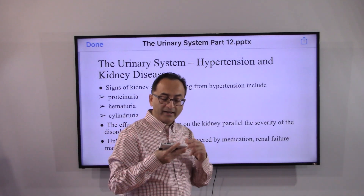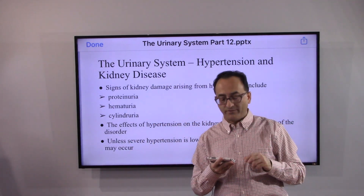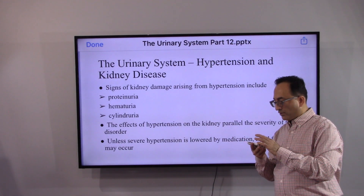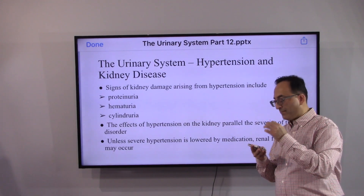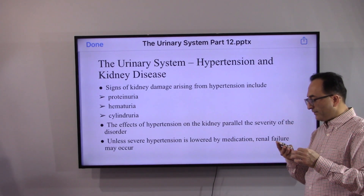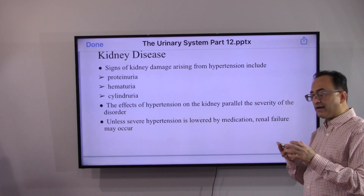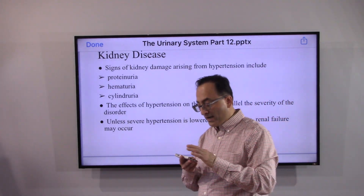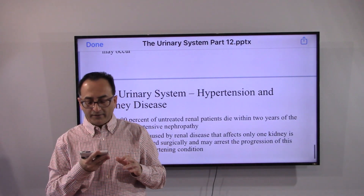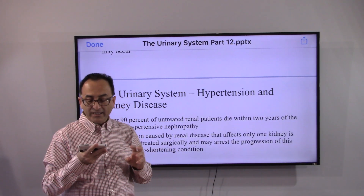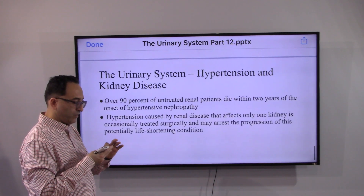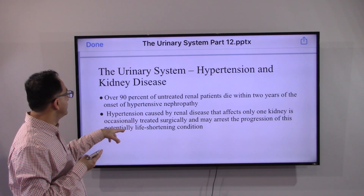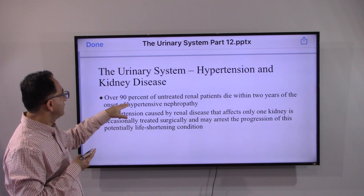Signs of kidney damage from hypertension can include protein in the urine, blood in the urine, and casts in the urine. Unless severe hypertension is lowered by medication, renal failure may occur. Data suggest that over 90% of untreated patients die within two years of onset of hypertensive nephropathy.